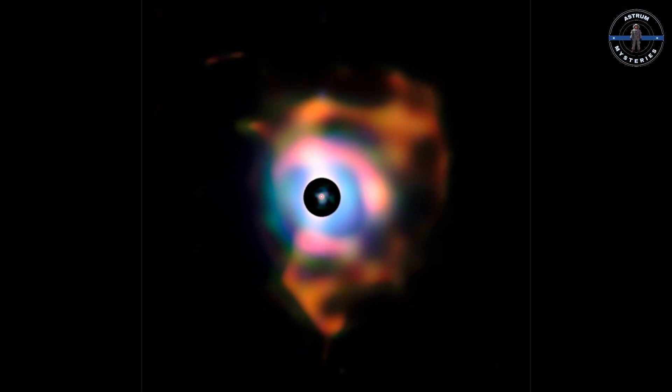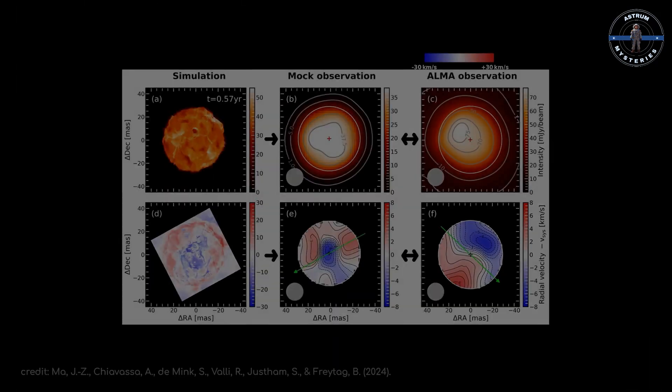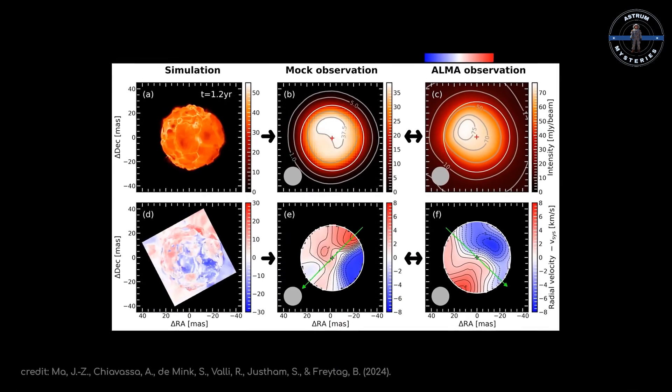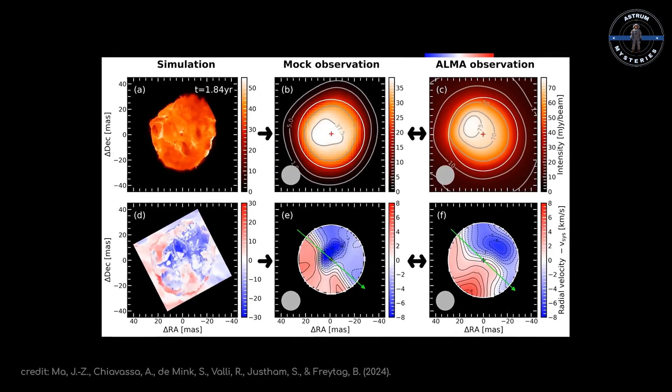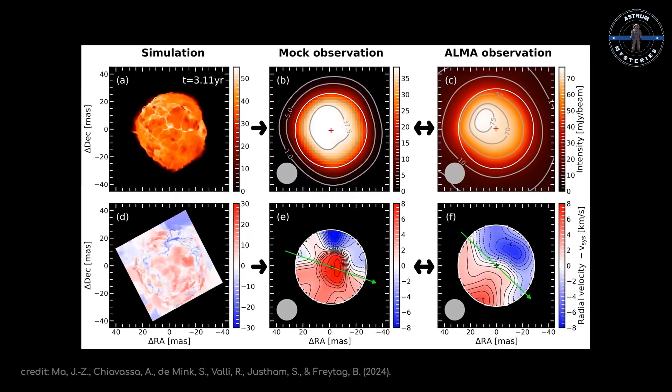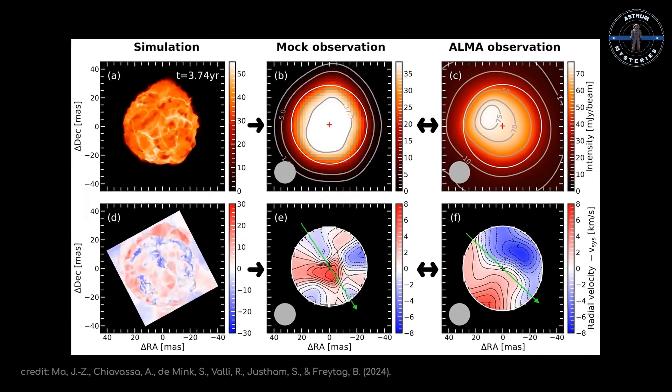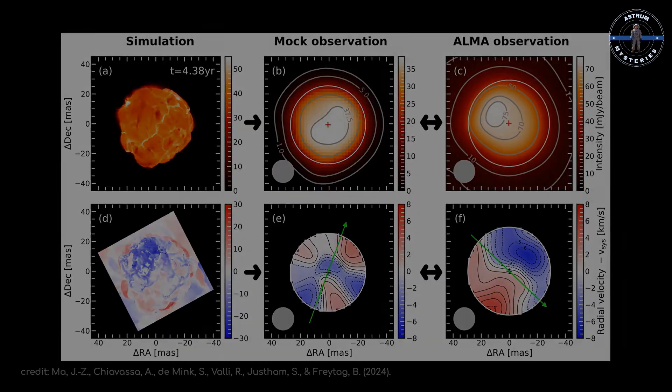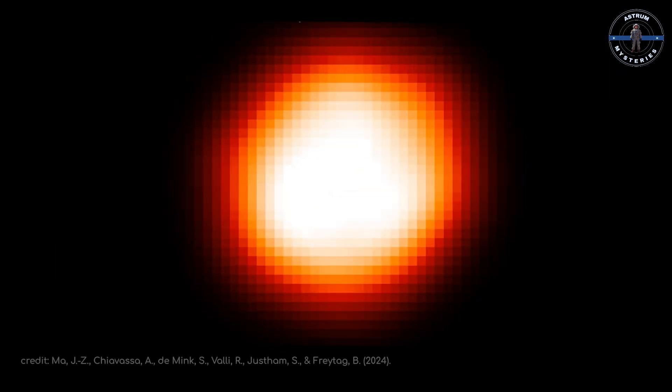Betelgeuse isn't just a dying star, it's a laboratory for the cosmos. Astronomers have discovered it's surrounded by massive magnetic fields and plagued by chaotic convective cells the size of entire planets. These forces create the star's pulsations and eruptions, adding layers of mystery to its already dramatic story.